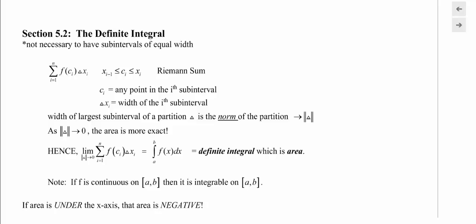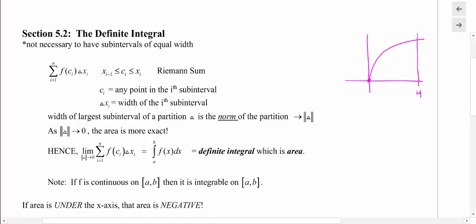Hi and welcome to a video on the definite integral for a Calc 1 course. Let's talk about the Riemann sum. You should have just completed some homework or practice on finding areas using rectangles — we put in a finite number of rectangles under a curve to get a good estimate for the area under the curve. We used, for example, the square root of x from 0 to 4 with four rectangles, using right endpoint, left endpoint, or midpoint to find the area.